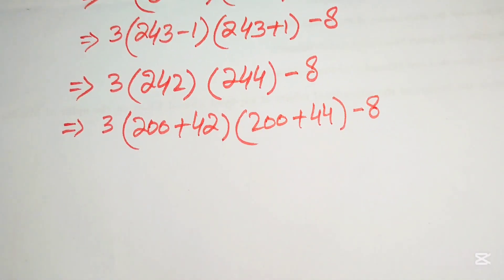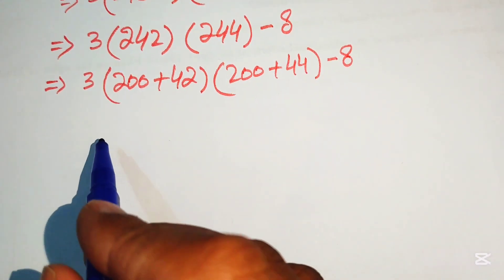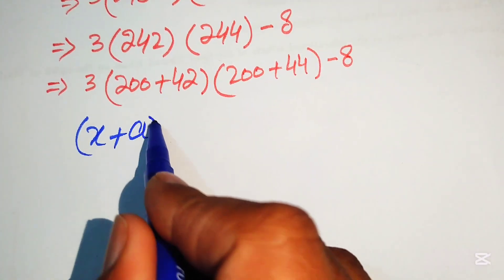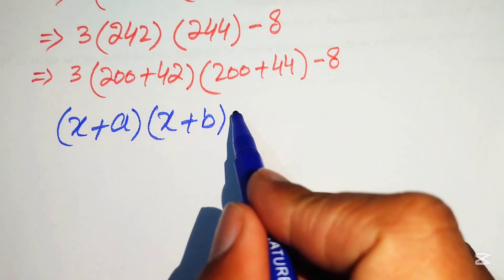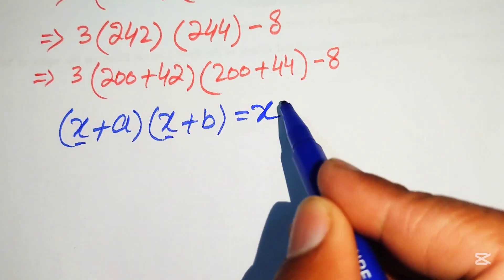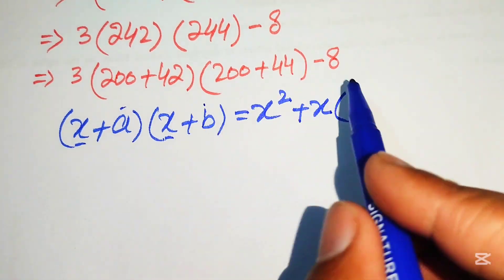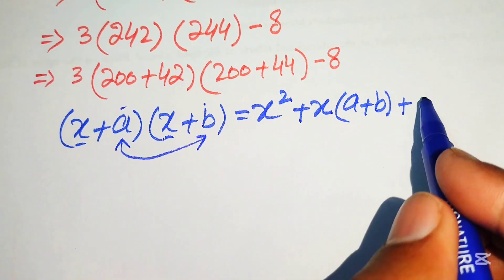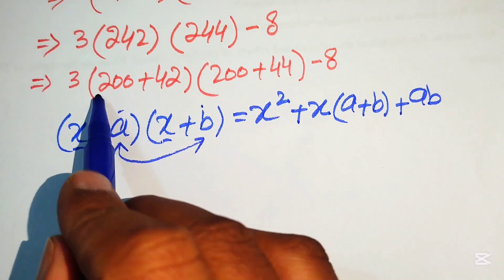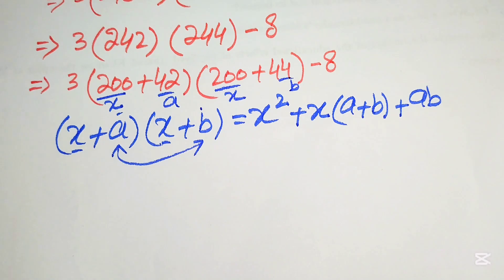To multiply these two factors, we use the algebraic formula: if we have x plus a times x plus b, the result is x squared plus x times a plus b, plus a times b. Here, x is 200, a is 42, and b is 44.